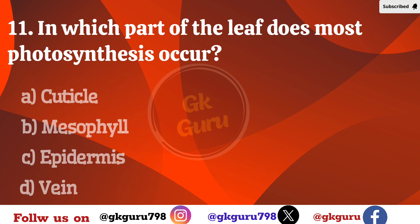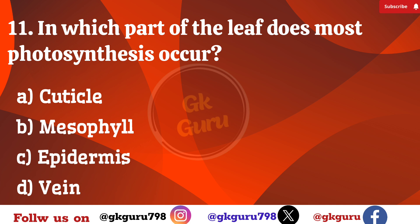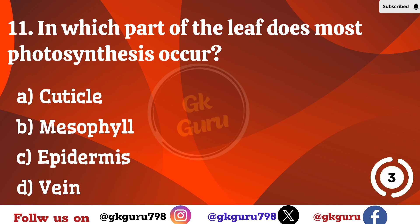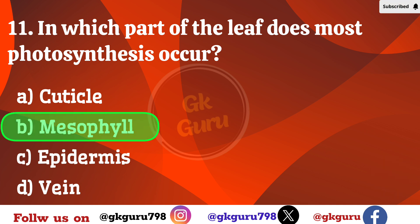11th question: In which part of the leaf does most photosynthesis occur? Option A: cuticle. Option B: mesophyll. Option C: epidermis. Option D: vein. Correct answer: Option B, mesophyll.